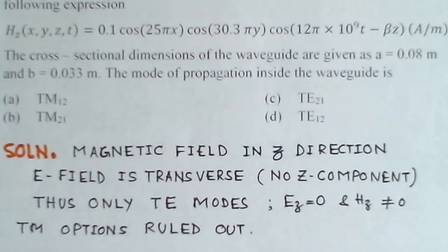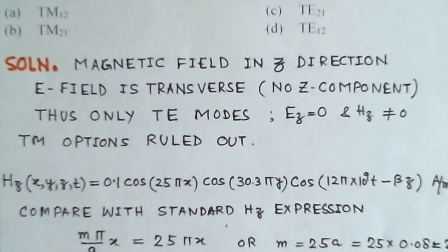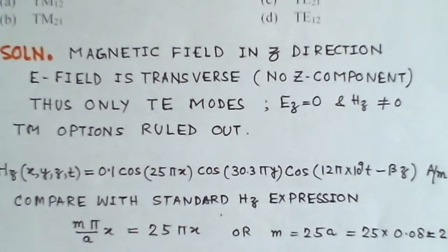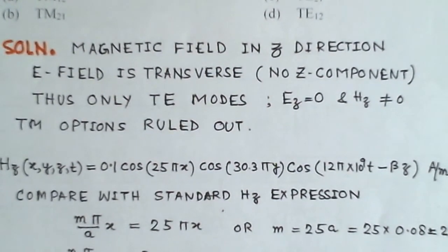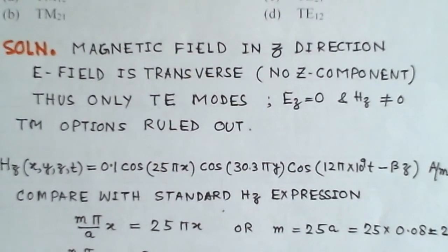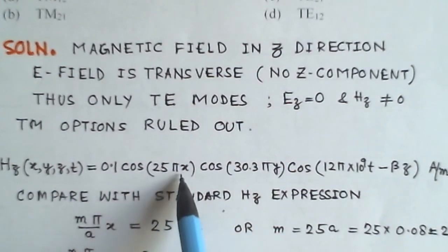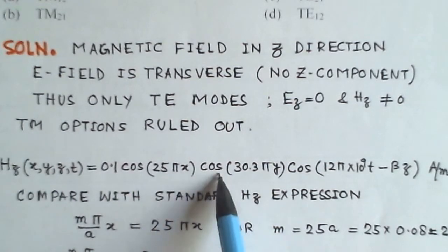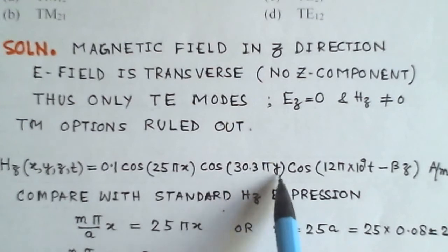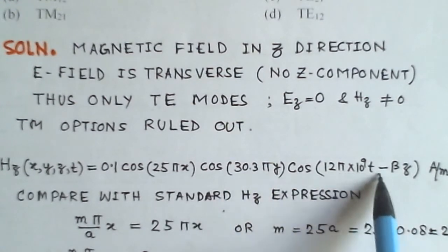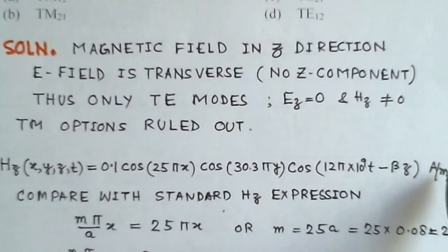Now we look at the given equation for the magnetic field in the waveguide. This is HZ(x, y, z, t) = 0.1 cos(25π x) cos(30.3π y) multiplied by a cosine term, and the units are amperes per meter.